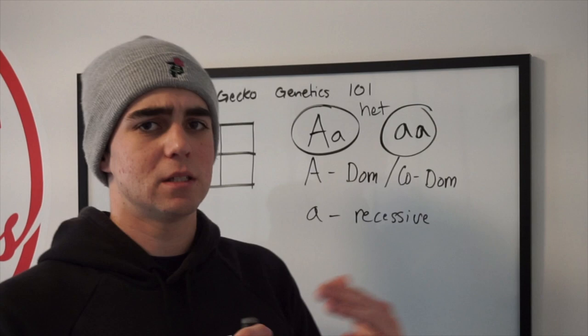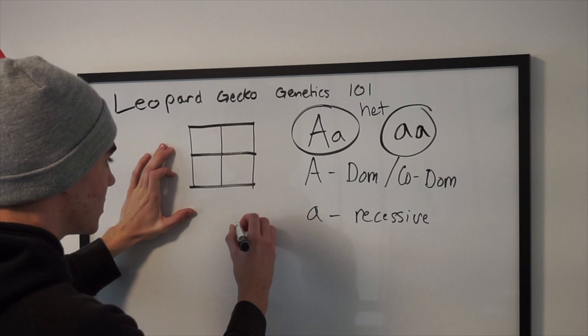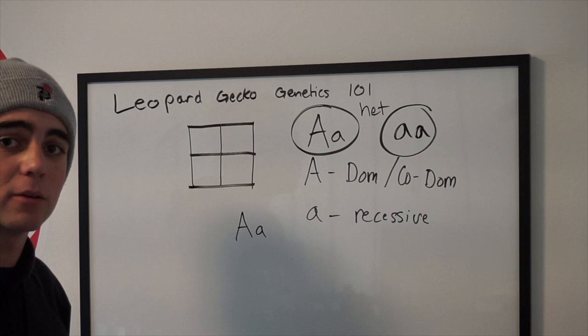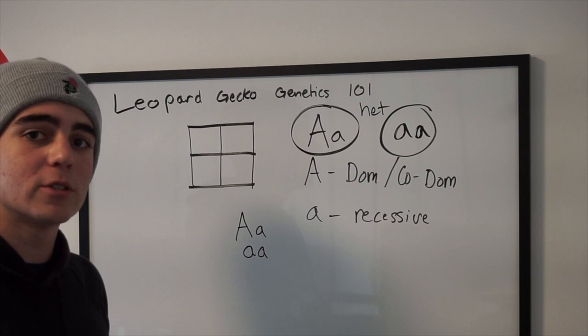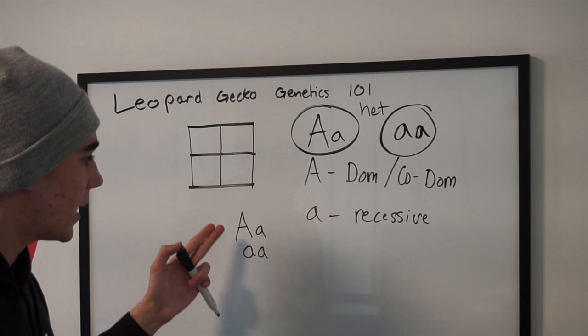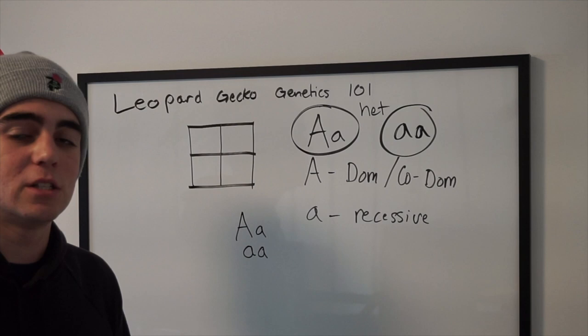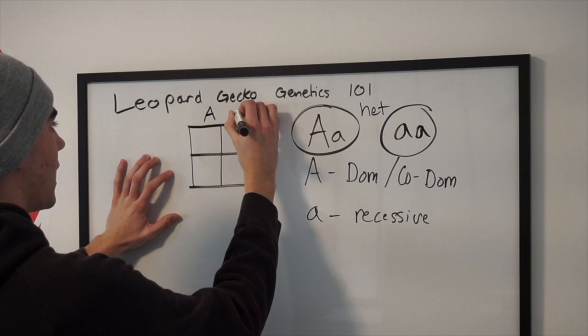So we're going to go ahead and draw a Punnett square, which I already have drawn out. Let's say we have a pairing — let's say the mother is a normal het albino. So A lowercase a. For A, we're going to imagine that it's the albino allele — the albino morph gene. And then let's say that the father is a visual albino, so he's homozygous albino and she's heterozygous albino. Instead of just saying he's homozygous albino, we just say he's an albino because he displays it visually. She's het albino — she carries one of the alleles but the two alleles are different, so she doesn't display it visually. So here's the mother: capital A, lowercase a. And the father: lowercase a, lowercase a.